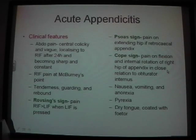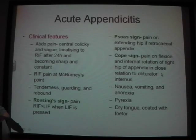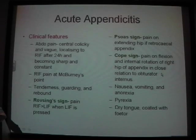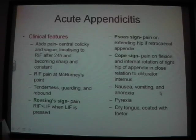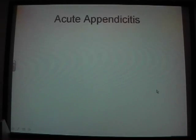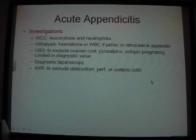There are specific signs for appendicitis, including Rovsing's, which is the most common sign — pressing on the left iliac fossa produces more pain in the right iliac fossa. The psoas sign occurs with a retrocaecal appendix on extension of the hip. The obturator sign occurs with an appendix in relation to the obturator internus, with flexion and internal rotation. Other clinical features include nausea, vomiting, fever, and dry tongue. You would check white cell count, as leukocytosis and neutrophilia are commonly seen.